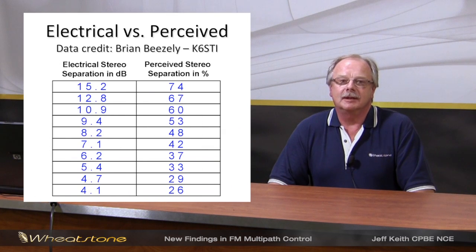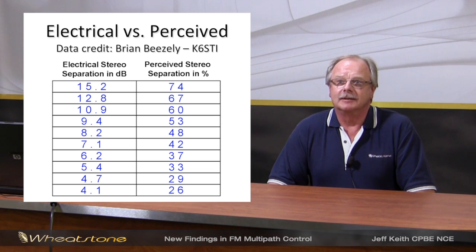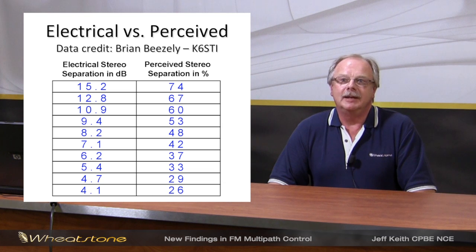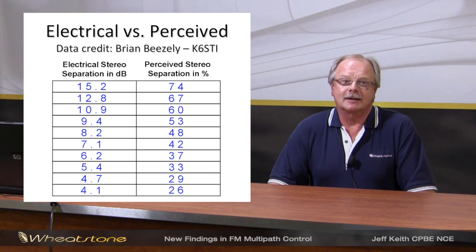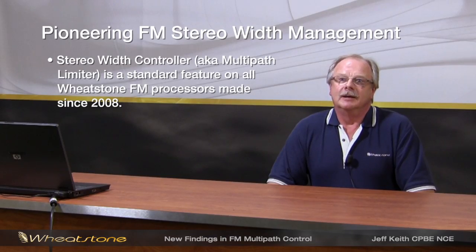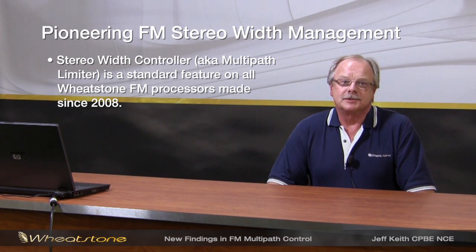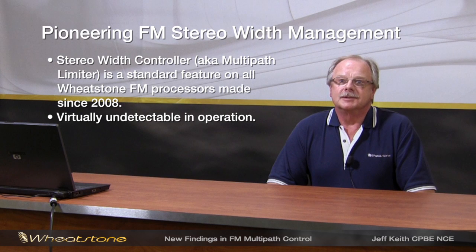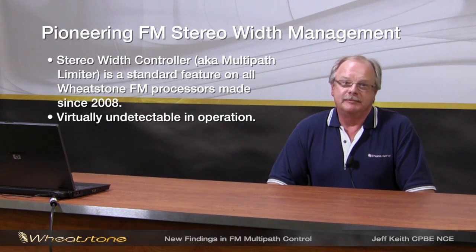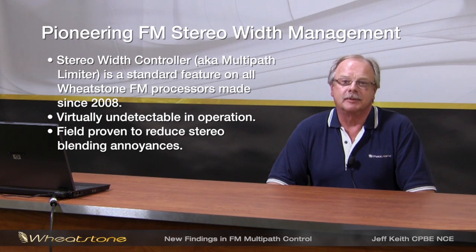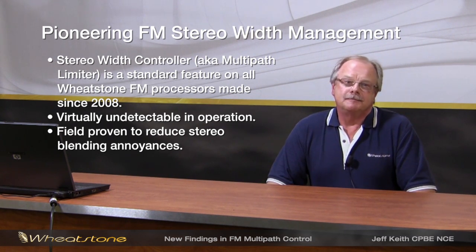A couple of years later, Brian Beasley, K6STI, took those graphs and tabulated the data — which is on this slide — and confirmed again that between 8, 9, and 10 dB of stereo separation, you've got most of the stereo experience still intact. So what does that mean? It means we can reduce the apparent incidences of multipath by managing the amount of L minus R signal that's actually being transmitted. We've put that in all of our FM stereo processors since 2008, and it's virtually undetectable in operation. It's been field-proven in hundreds of installations to reduce the stereo blending annoyances that multipath would typically cause. It actually works.